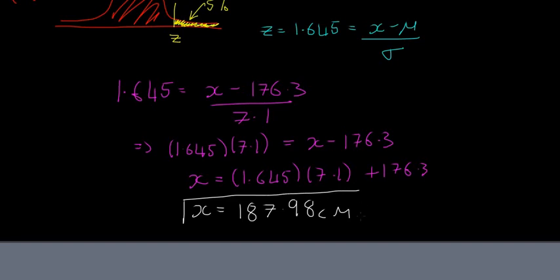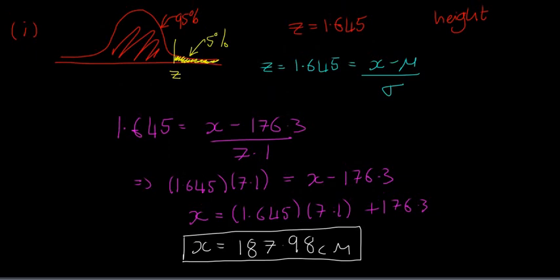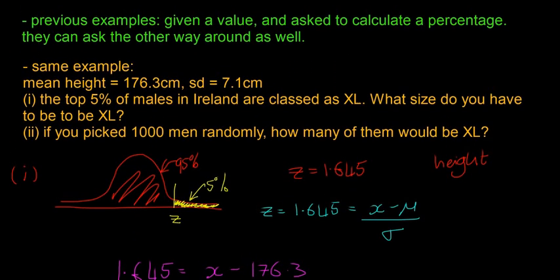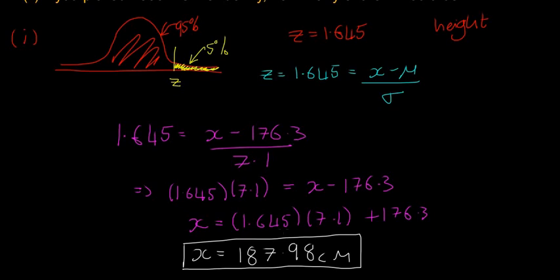So our answer for the height is X is going to be 187.98 centimeters. So if you're 187.98 centimeters, if you're above that, then you're going to be in the top 5% and you're going to be classed as XL or extra large. And so part two is the only question, only bit we have left. Hopefully that makes sense. That's the method that if they give you a percentage, you have to work back and try to find the value.